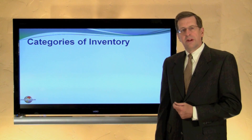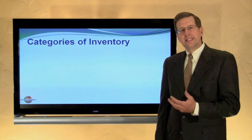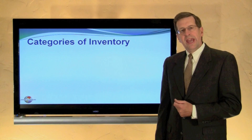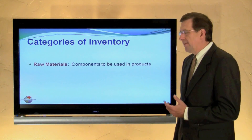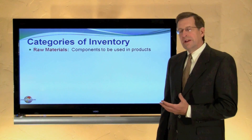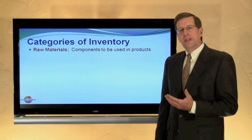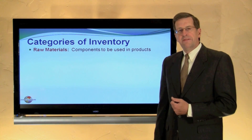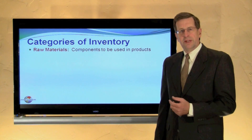We have similar considerations for a manufacturer, except that we have three categories of inventory. The first category is our raw materials — these are the components that are to be used in the manufacturer's products.